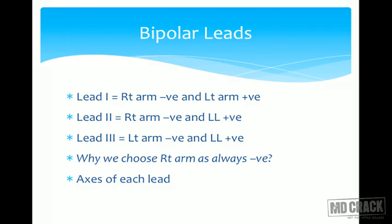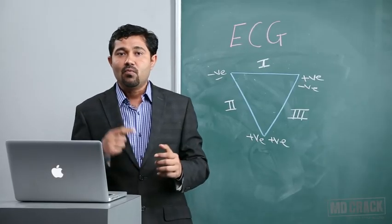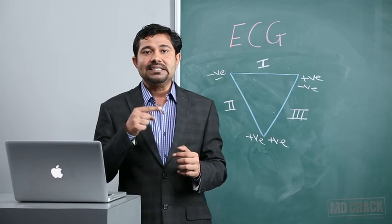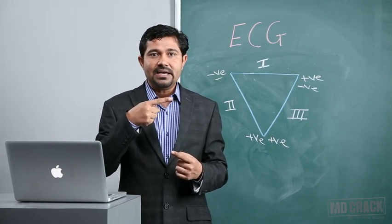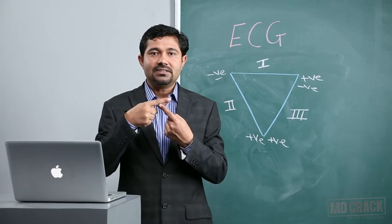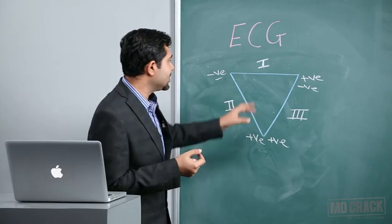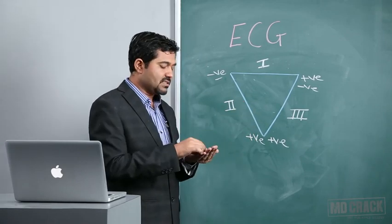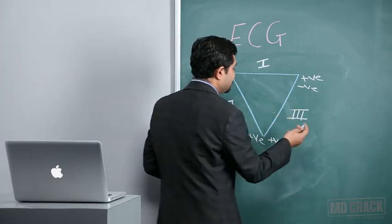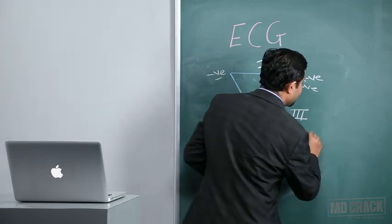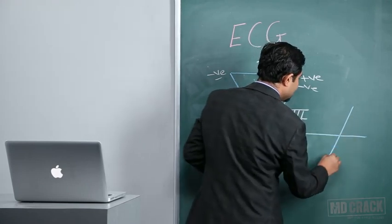Now, what is the axis of each lead? As we have seen, how much voltage will be recorded in each lead depends upon the direction of that lead — the axis of that lead — and the resultant factor: how much is the projection on that. To calculate the axis, we just have to merge these three leads, and whatever picture we get will be this one.